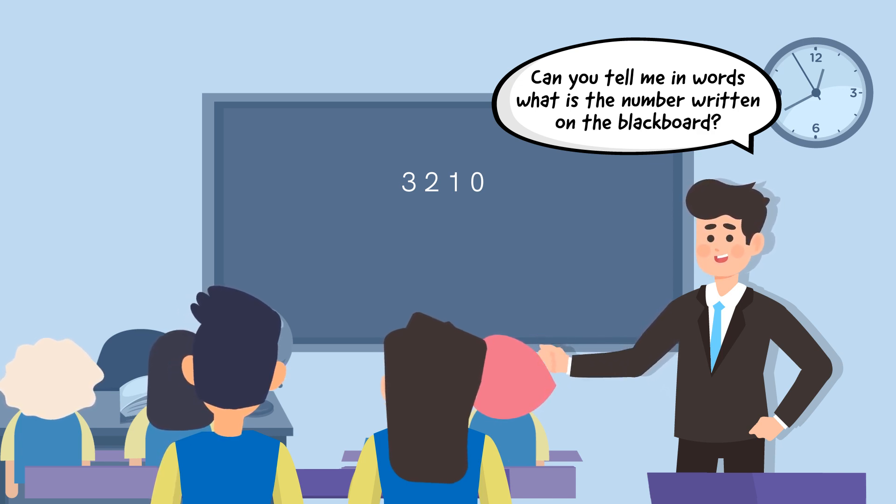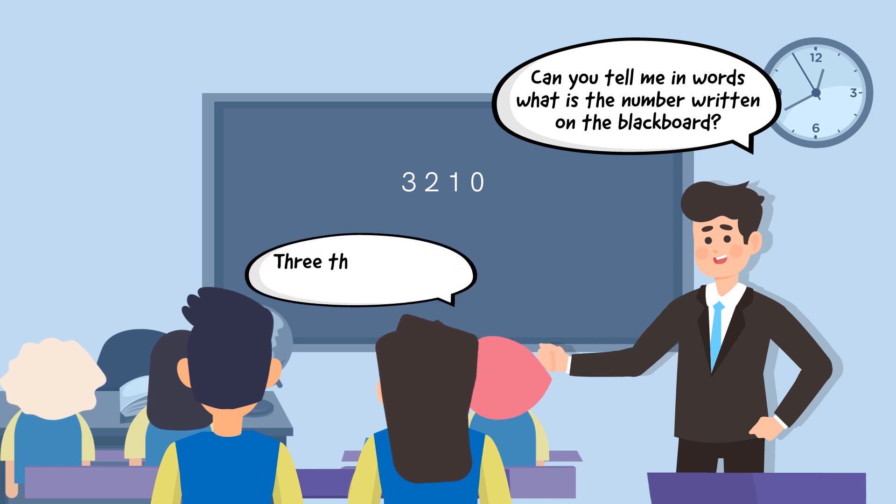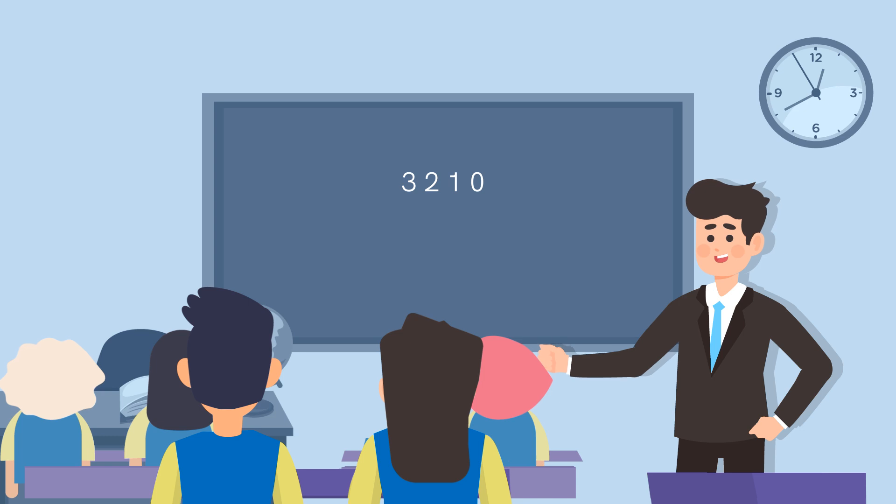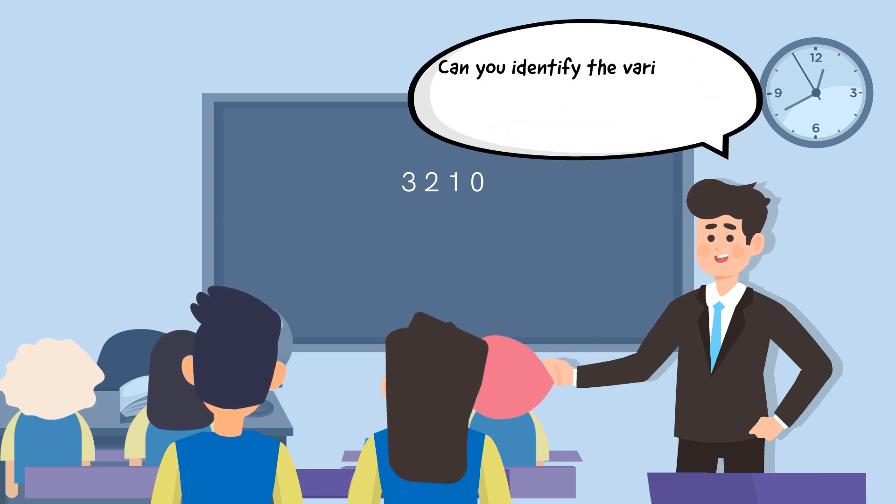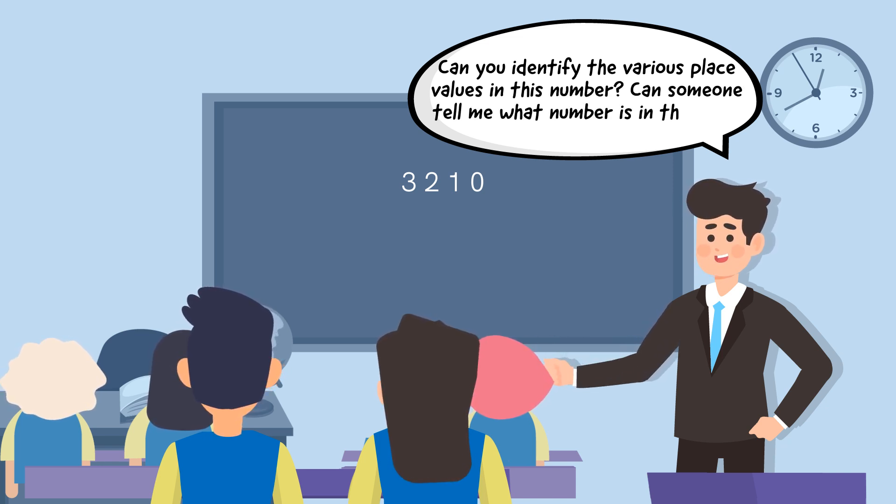A possible response will be 'three thousand two hundred and ten.' Following this, ask them, 'Can you identify the various place values in this number? Can someone tell me what number is in the units place?'